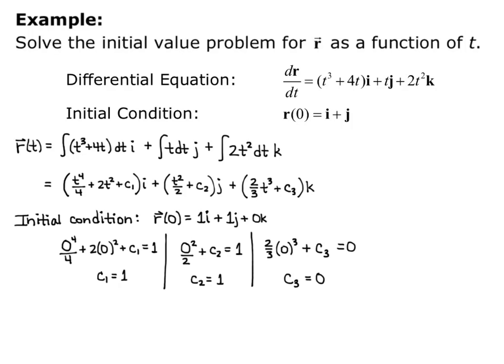Be careful here because you won't always be plugging in 0, so you won't always have things zeroing out. Make sure you go through the whole process of plugging in whatever t value you're given and setting it equal to whatever number you're given in front of each i, j, and k component.